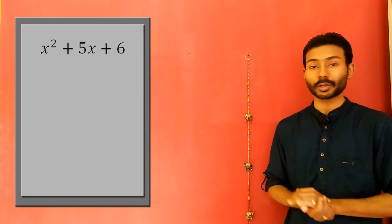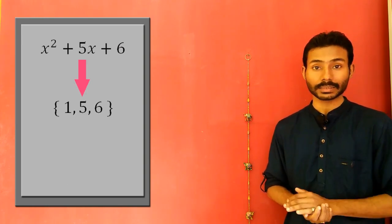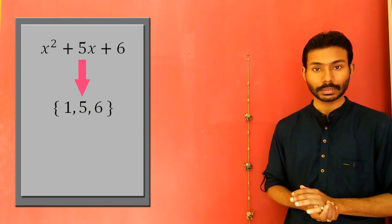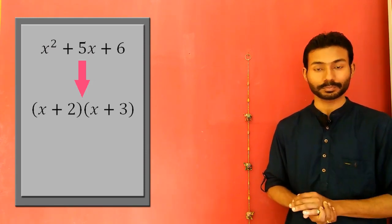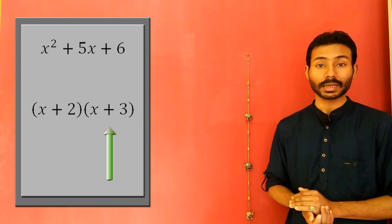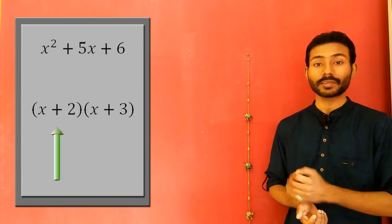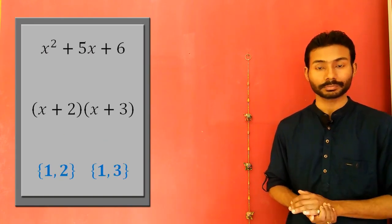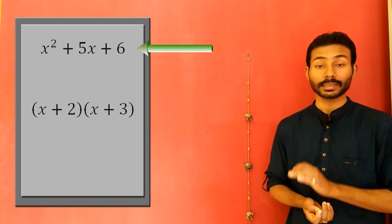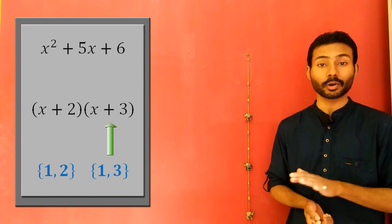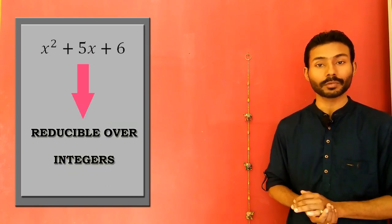Let's take this polynomial for example. The coefficients of this polynomial are 1, 5, and 6, which are all integers. This polynomial can be expressed as a product of these two factors. The degrees of both these factors are less than the degree of the given polynomial, and the coefficients of both these factors are all integers. So the given polynomial is reducible over the set of all integers.